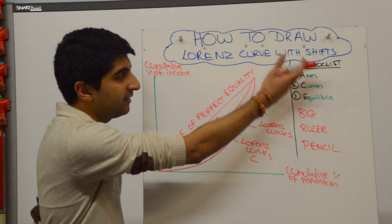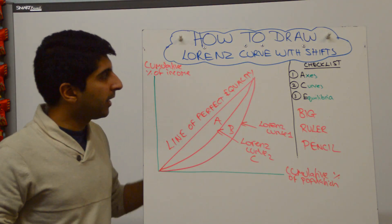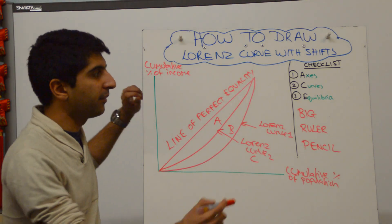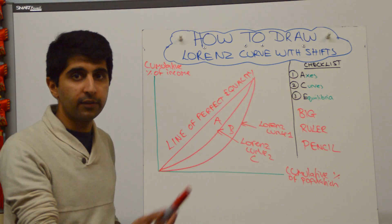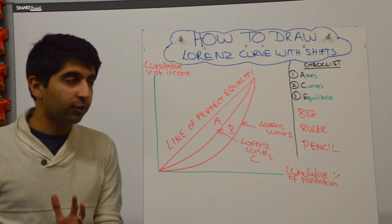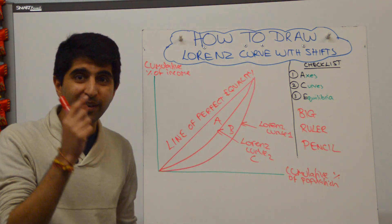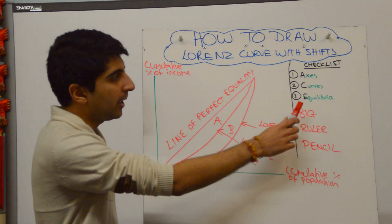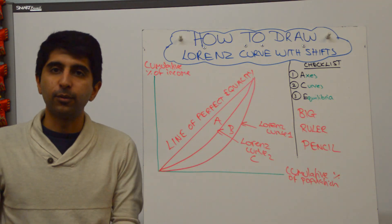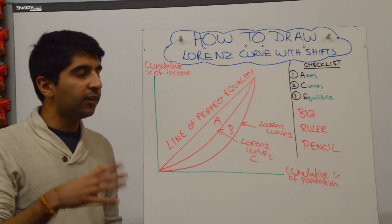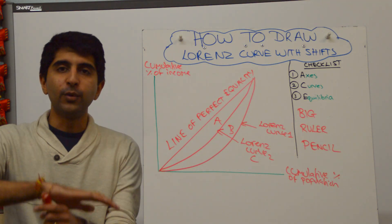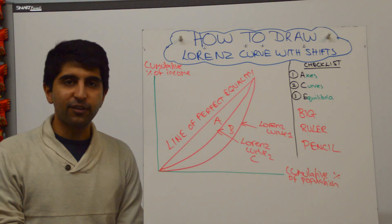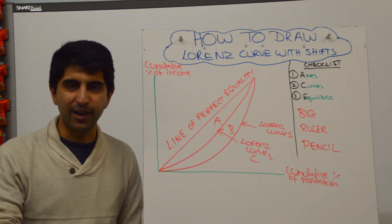Always check that we've aced the diagram. Have we labelled our axes? That's really important here — yes, we have. Have we labelled all of our different curves and lines? Yes, we have — that's very important to do and very easily forgotten when using Lorenz curve diagrams. Have we labelled our equilibrium? There are none, so we don't need to worry about that. Therefore, we have aced our diagram and we can move on and continue with our analysis. Thanks very much for watching, guys — I'll see you all in the next video.